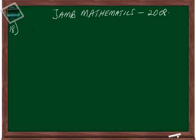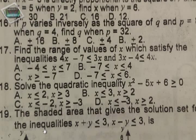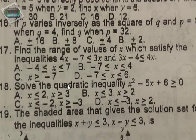Our next question is question number 18, which asks us to solve the quadratic inequality x squared minus five x plus six greater than or equal to zero. To solve this quadratic inequality problem, you have to go through a series of steps. Though it's much like a quadratic equation, it's a little bit different.